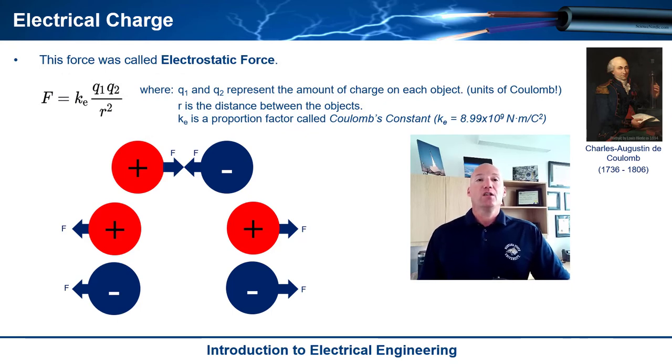He called this force an electrostatic force. And he actually even came up with an equation for it. And you can see the equation here. It's F is equal to a constant times Q1 times Q2 over R squared. And so in these properties, Q1 and Q2 represent the amount of charge on each object. And you notice that they can be variable. So the charge doesn't have to be equal amongst them. You can have one object that has a lot more charge than the other.